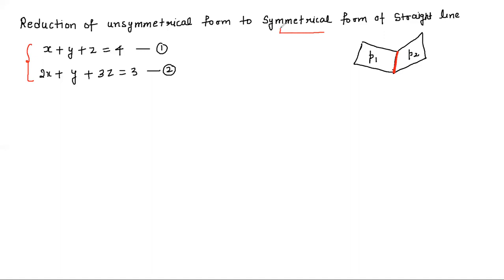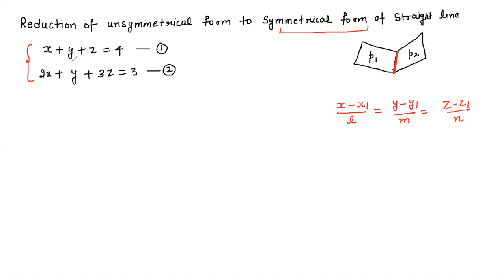So what do we do? We reduce this into the symmetrical form. What is the symmetrical form of a straight line? In the 3D straight line equation: (x − x₁)/l = (y − y₁)/m = (z − z₁)/n. This is the symmetrical form. We reduce the unsymmetrical form into this symmetrical form.